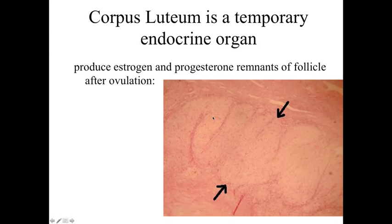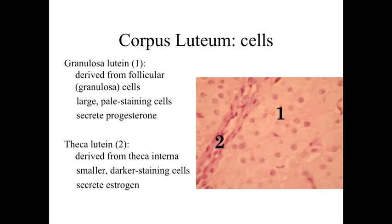After ovulation, what's left behind are the follicular cells and theca cells, which give rise to the corpus luteum — a temporary endocrine structure with a woven, twisted appearance involved with the production of estrogen and progesterone. At higher magnification, we can see the granulosa lutein cells, derived from the granulosa or follicular cells, which are larger, paler-staining cells involved with secretion of progesterone. The smaller, darker-staining cells are derived from the theca interna and are involved with the production and secretion of estrogen.